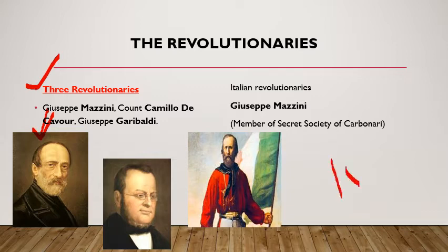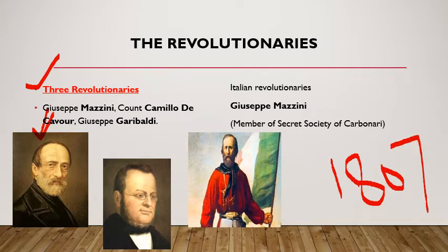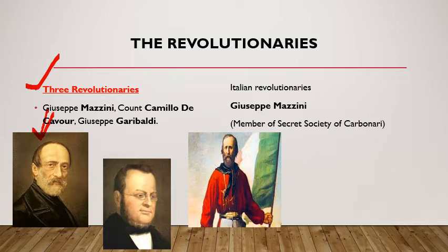Joseph Mazzini was born on 22nd June 1807 in a middle-class family. He was a patriot, Italian revolutionary, founder of Young Italy, and an important figure in liberal nationalism. In 1830, he joined the revolutionary Carbonari, a secret association with political purposes, for which he was arrested and put in jail.